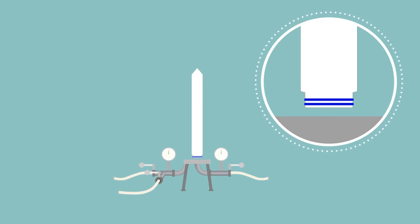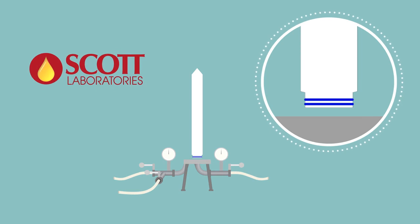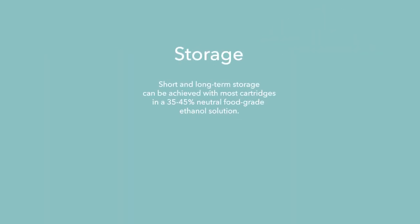Chemical regeneration of the cartridge or membrane can be performed at this point. Check with your supplier or Scott Laboratories for specific protocols and procedures. Short and long-term storage can be achieved with most cartridges in a 35 to 45 percent neutral food-grade ethanol solution. When reusing a stored cartridge, users should perform all rinsing, sanitation, and integrity tests prior to subsequent use.